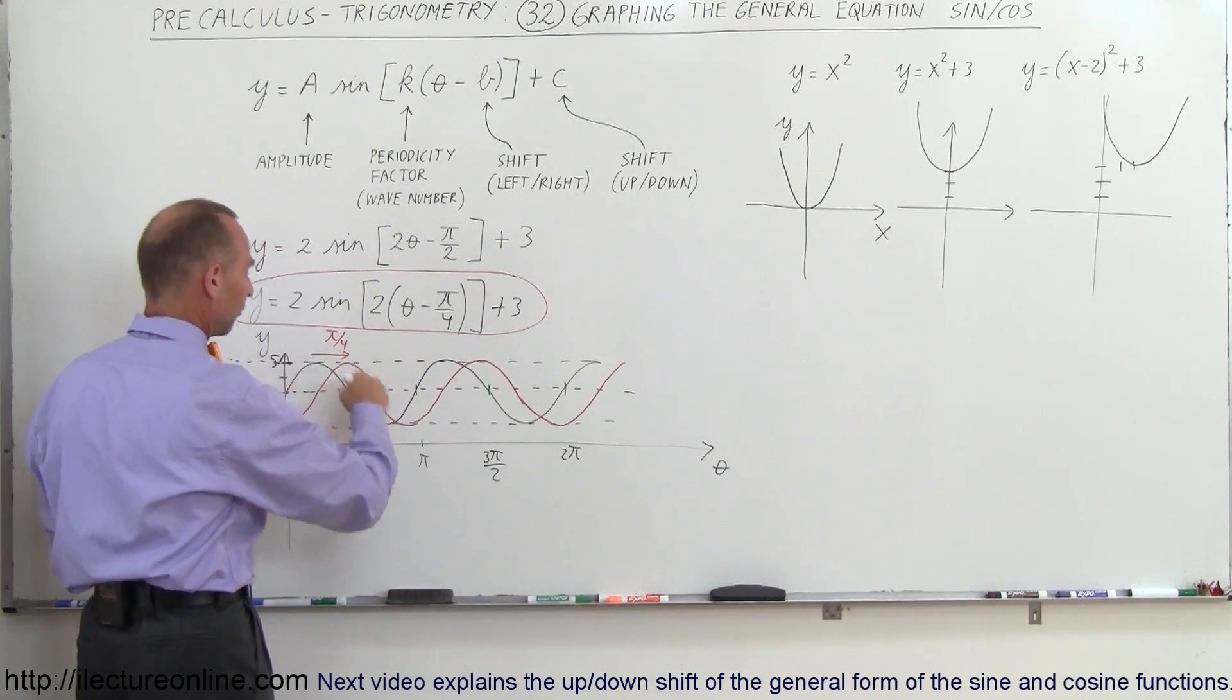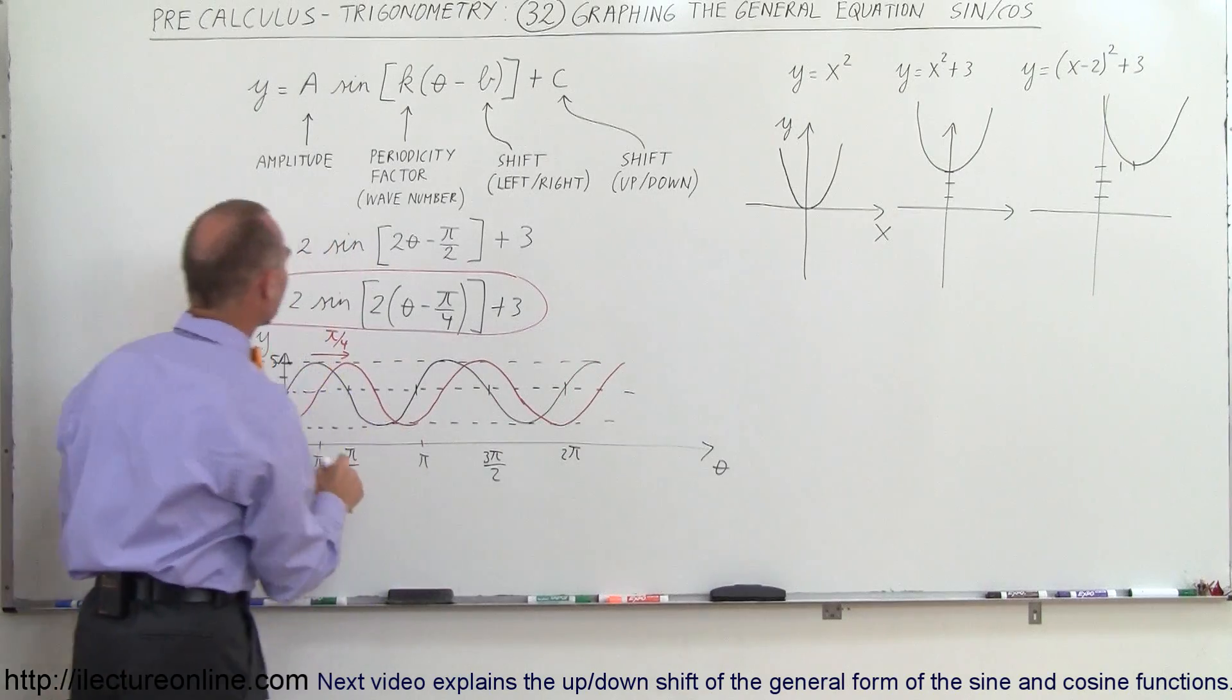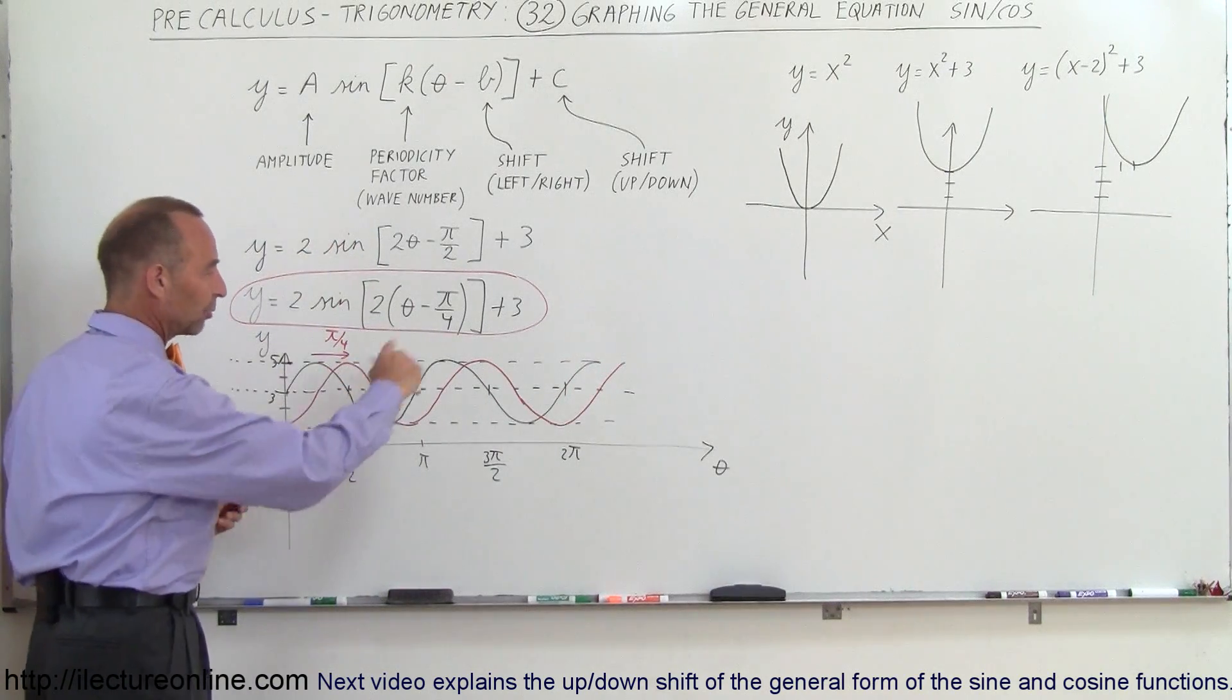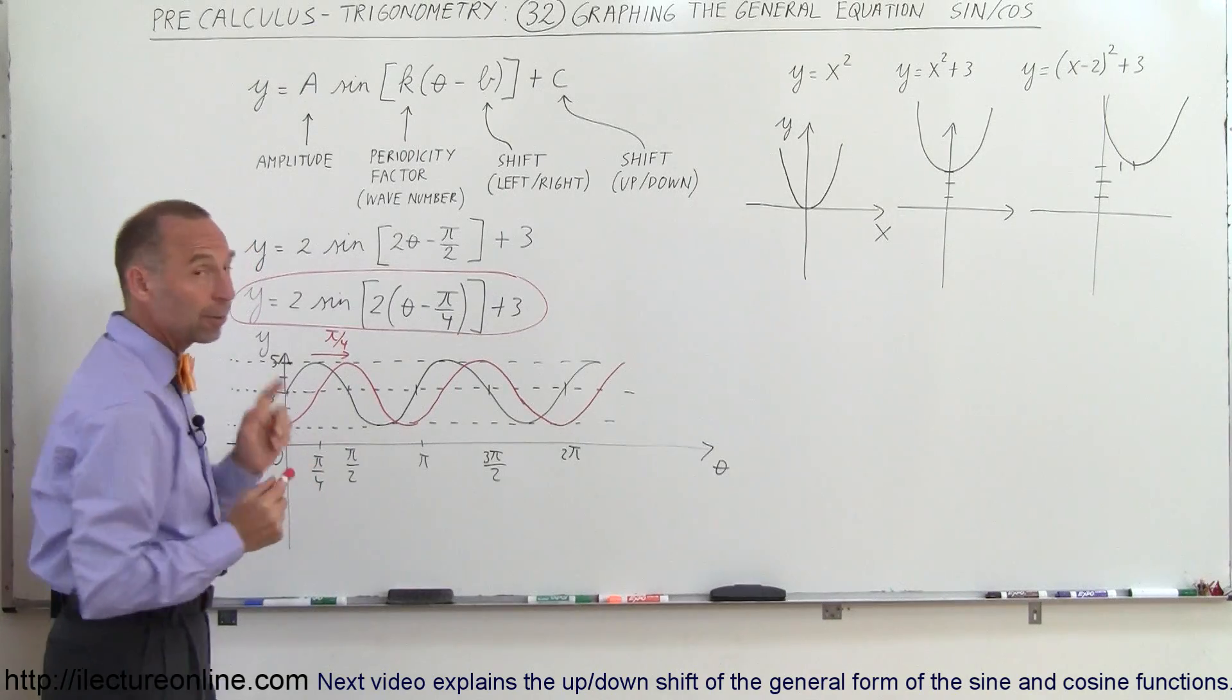Periodicity factor is 2, so you have two oscillations for a 2π period, and then the amplitude is 2, so we go up 2 and down 2 as we're oscillating back and forth, and that's how you graph it.